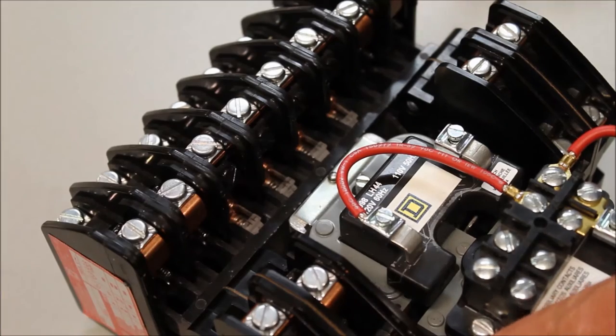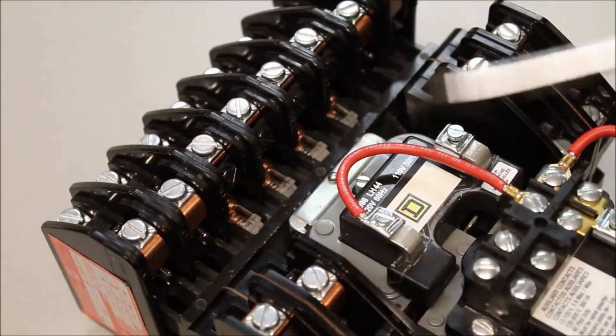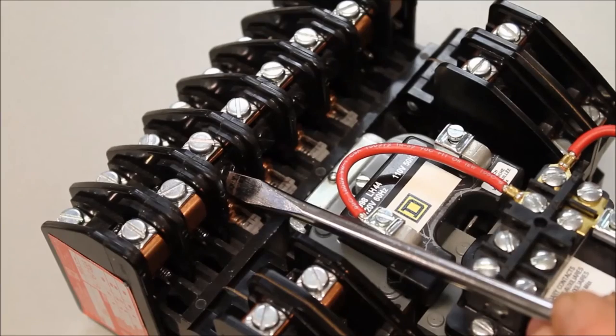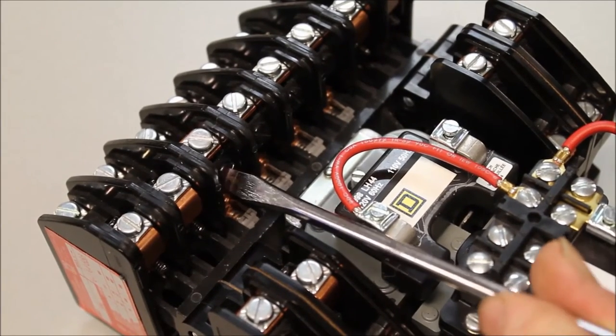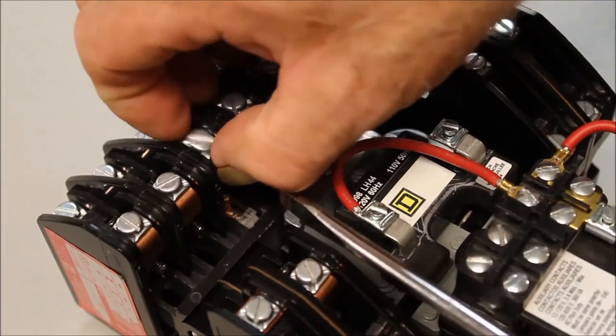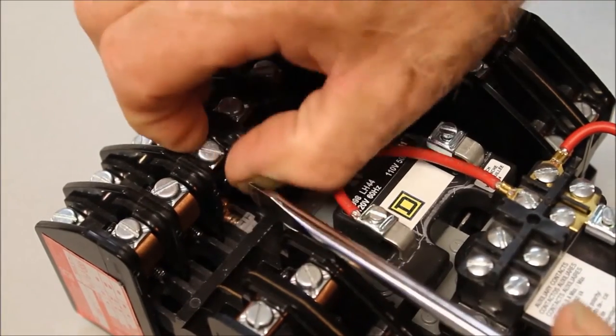It can be a very simple process to transition between normally open to normally closed or vice versa. The first thing we want to do is unscrew the screw that secures the movable contact into the device itself.